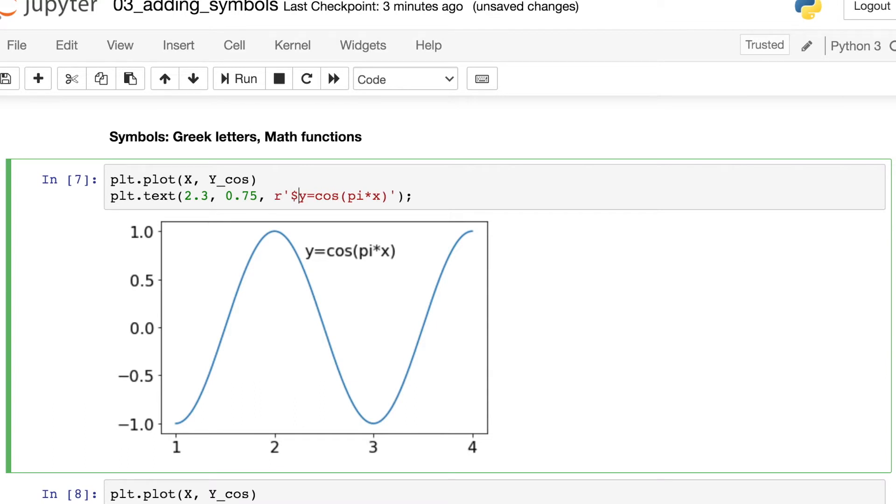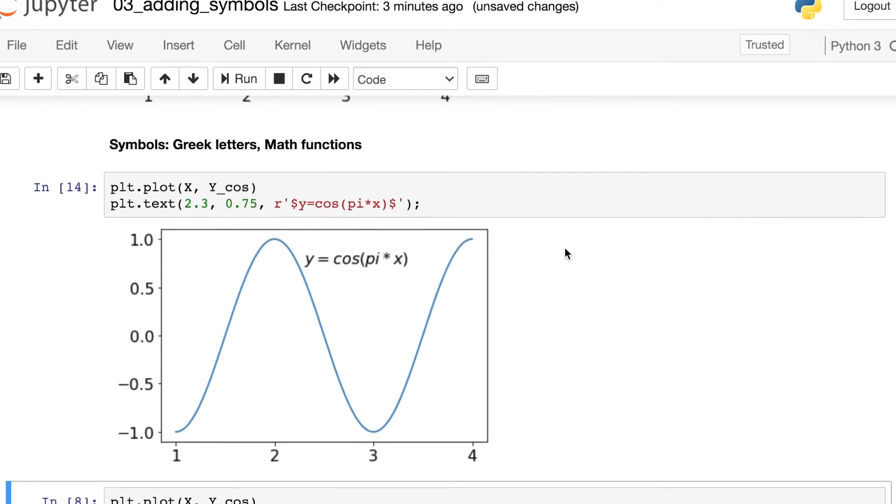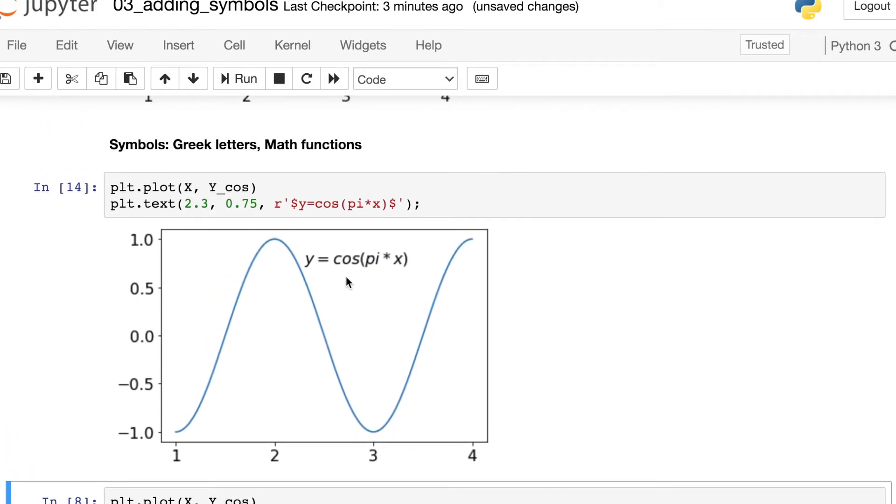Let's try our same trick before using the R prefix and surrounding this by dollar signs. This actually just makes all that text italicized. So we need to do something slightly different here.